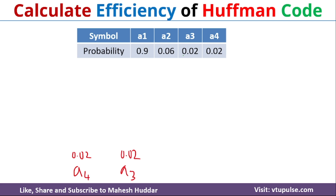If you look at this particular case, we have A3 and A4 having probability 0.02 and 0.02. So we will select those two and then create a node here. We will merge A3 and A4 to get the next node, that is 0.04. If you add 0.02 and 0.02, you will get 0.04. A1 and A2 are not yet considered and their probabilities are 0.9 and 0.06. After considering A3 and A4, we got the probability 0.04.